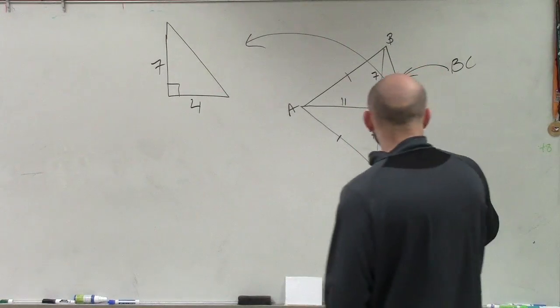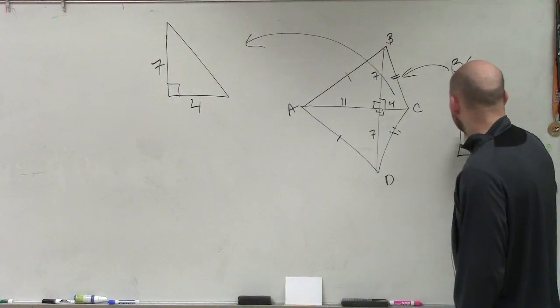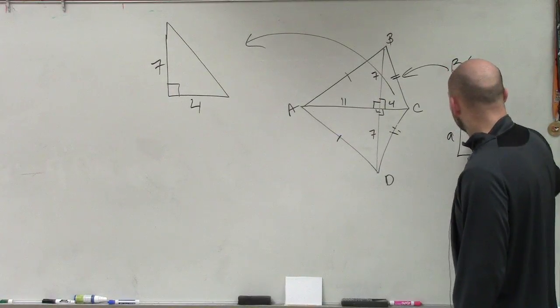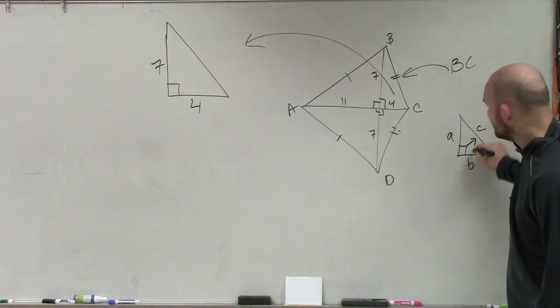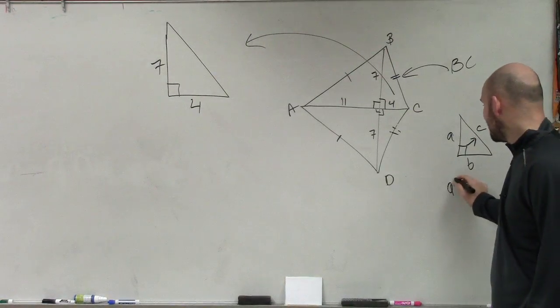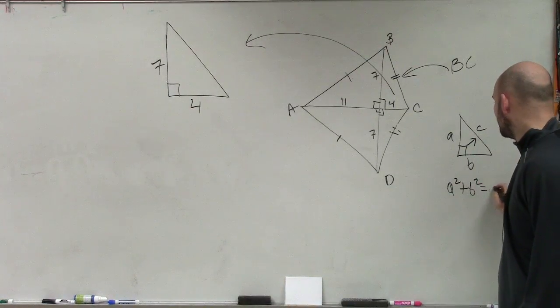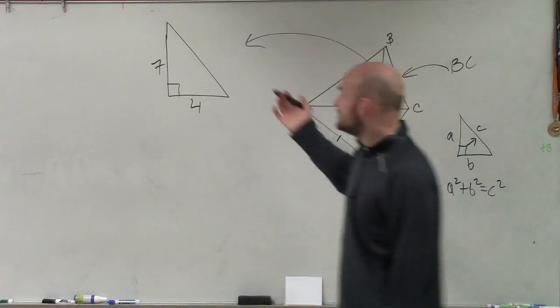Remember, the Pythagorean theorem states that when I have a triangle with three side lengths that's a right triangle, where c represents my hypotenuse, I can say a squared plus b squared equals c squared. So in this case,